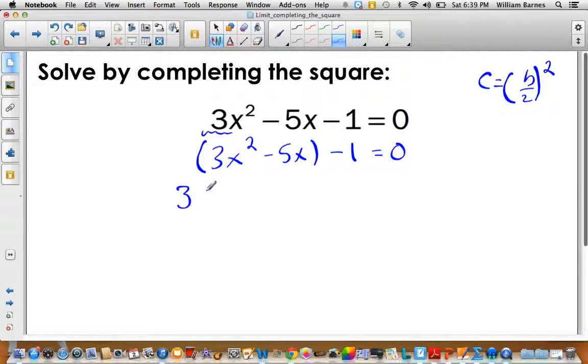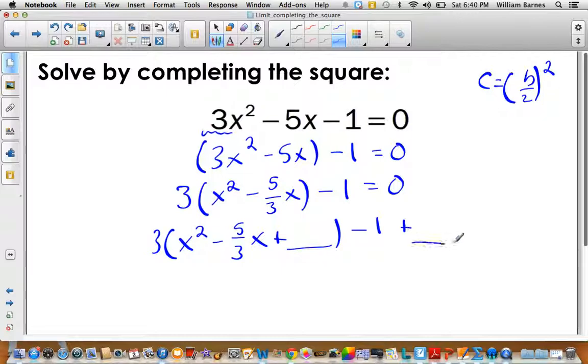What I like to do is take out whatever is in front of my x squared. No matter what it is, no matter what kind of numbers it gives us, take it out, make life easier for us. Let's take a 3 out of this set of brackets here. Inside, it becomes x squared minus 5 over 3x minus 1 equals 0. Now my b term is 5 over 3, which is a pain, but it is what it is.